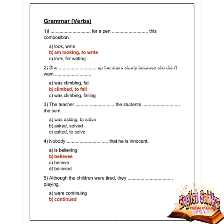Next question: she climbed up the stairs slowly because she didn't want to fall — which verb form? Options are was climbing, climbs to fall, was gambling/falling. Option B is correct — she climbs up the stairs slowly because she didn't want to fall. Next question: the teacher asked the student to solve the sum. Option C is correct — asked to solve.